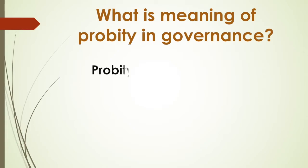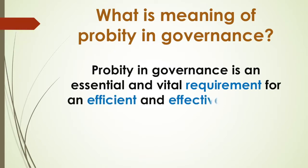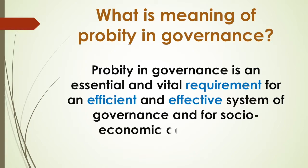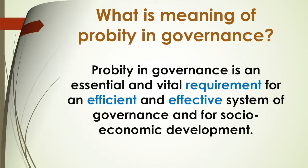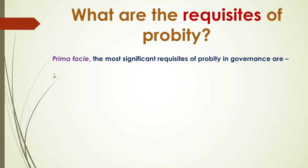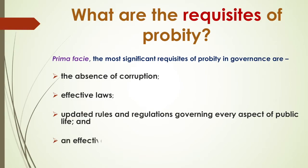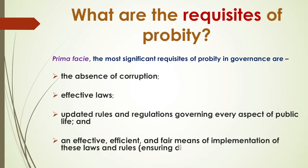The next question is: what is the meaning of probity in governance? Probity in governance is an essential and vital requirement for an efficient and effective system of governance and for socio-economic development. The most significant requisite of probity in governance is the absence of corruption, effective laws, updated rules and regulations governing every aspect of public life, and an effective, efficient, and fair means of implementation of these laws and rules, ensuring discipline in the system.